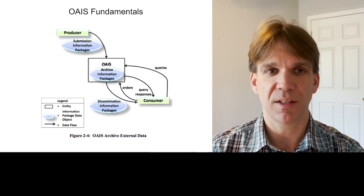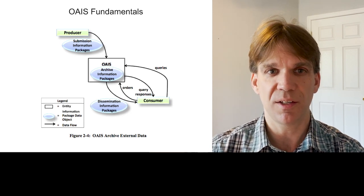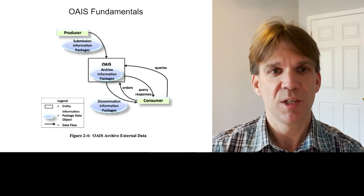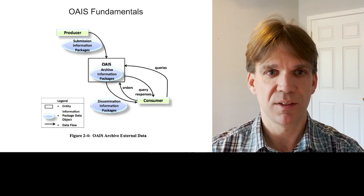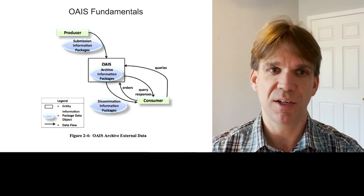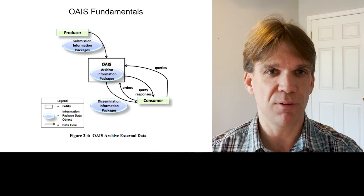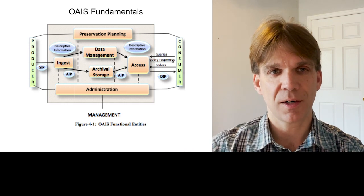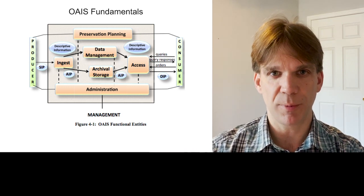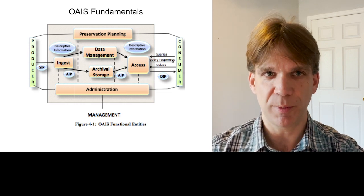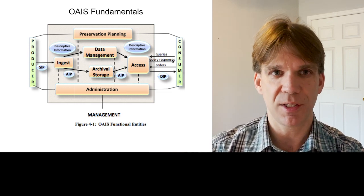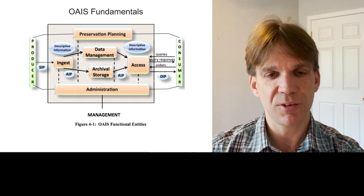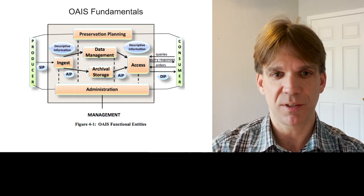For digital collections, often the data that the archive makes accessible is different than the data that the archive receives. For instance, an archive may receive a Microsoft Word document but use a PDF version to provide access. Or an archive may receive a videotape, digitize that videotape into an archival video file for preservation, and then offer an online MP4 copy for access. The archive manages the transformation of the Submission Information Package, or SIP, to the Archival Information Package, or AIP, to meet the objectives of preservation, and also transforms the AIP to the Dissemination Information Package, or DIP, to meet the objectives of access.